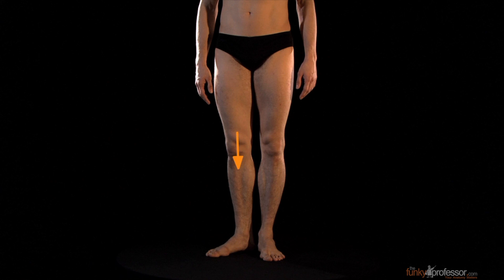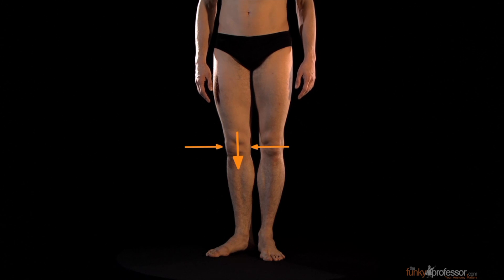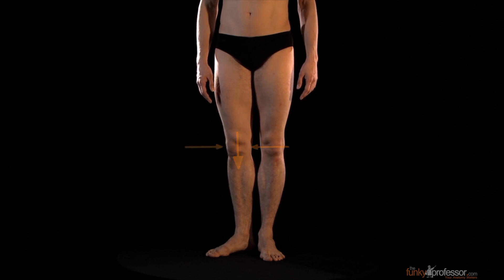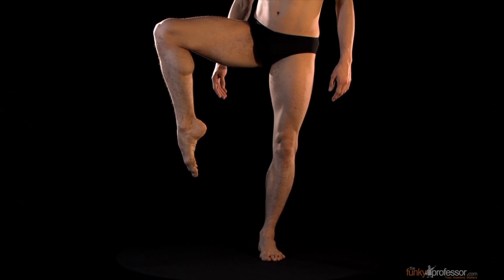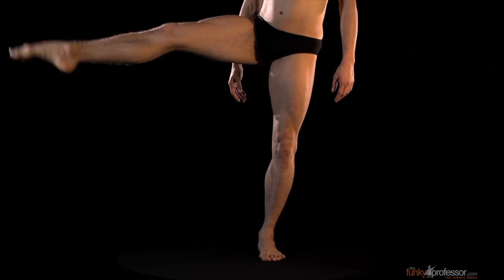Most skeletal muscles cross joints and are anchored to bone on either side of the joint. Thus, when skeletal muscles contract, they cause movement in the joint.